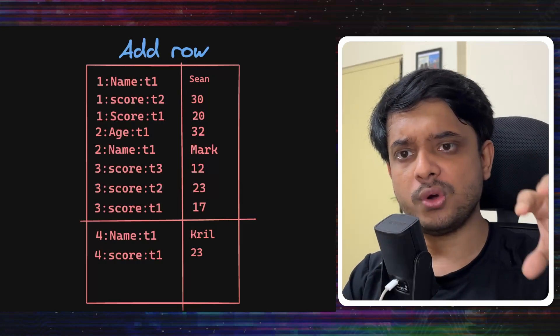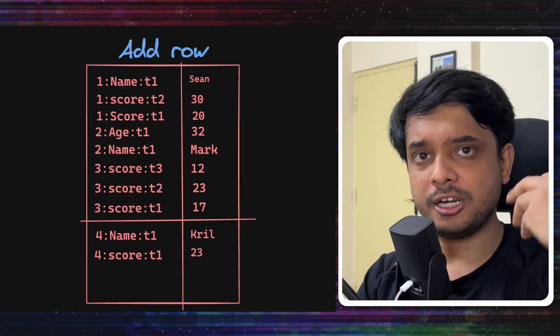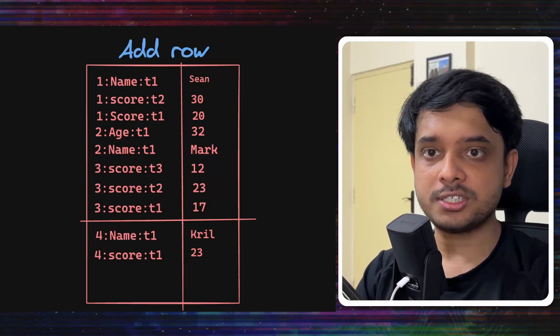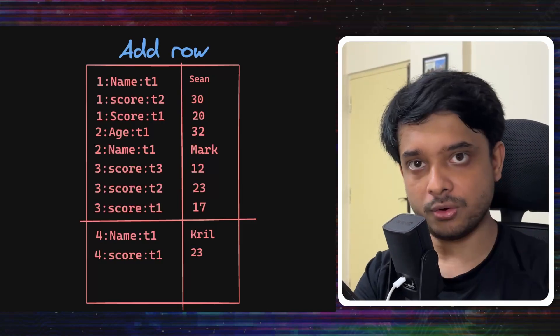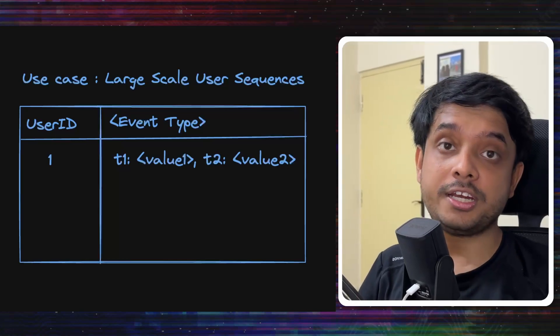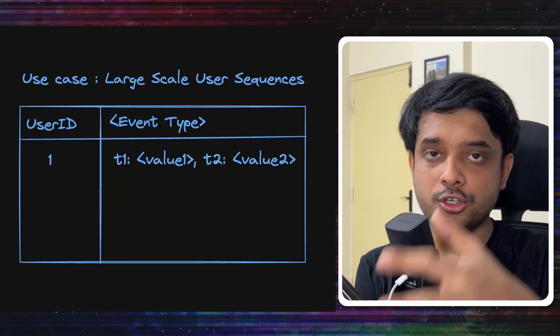Let's say we also want to add a new value in a particular row under a particular column and give it a new timestamp. So basically we want to add a new cell. Simple. We would create a key for that new cell and we know how to create keys and we will put it in RocksDB key value store.